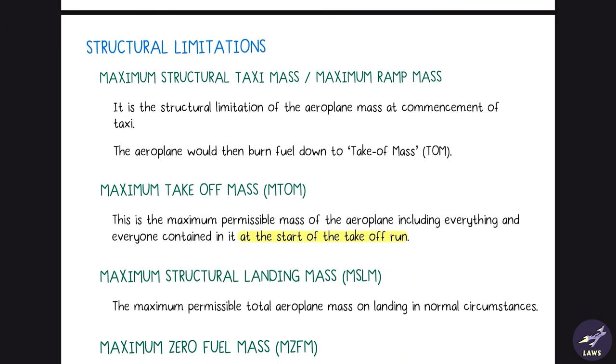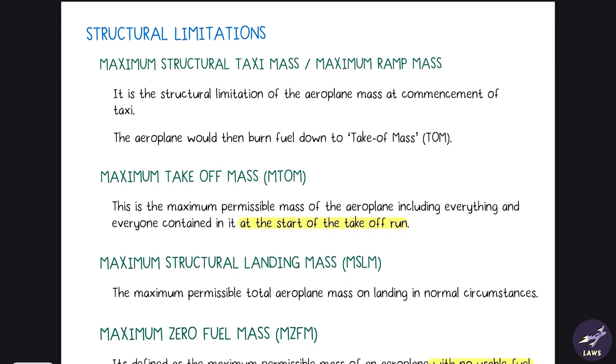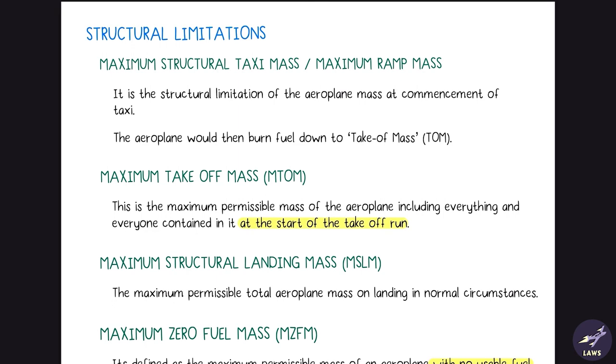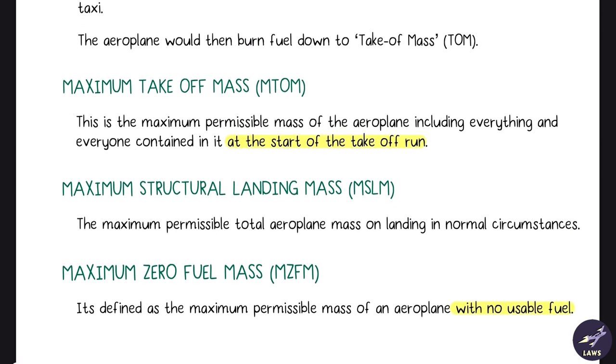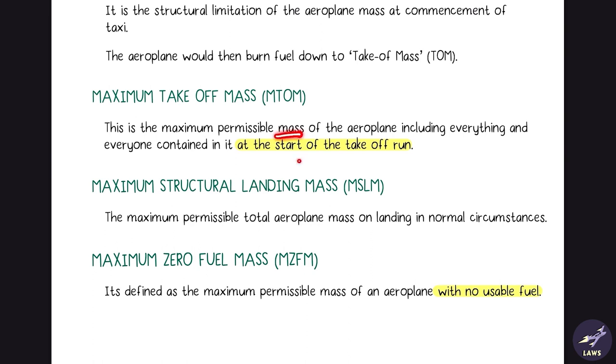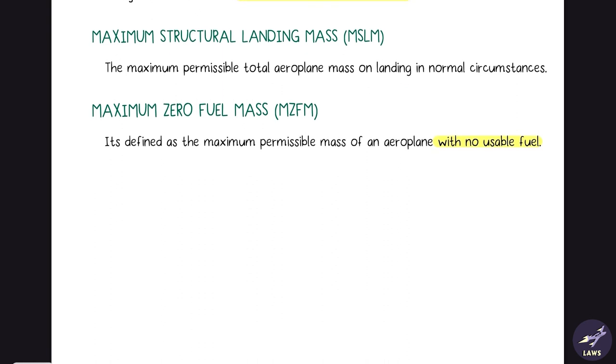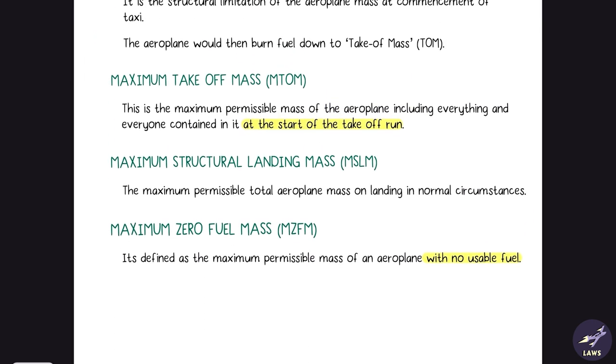Then we will look at structural limitations. Maximum structural taxi mass or maximum ramp mass is a structural limitation of the airplane mass at the commencement of taxiing. Then you have maximum takeoff mass, which is the maximum permissible mass at the start of the takeoff run. Then you have maximum structural landing mass, total airplane mass on landing in normal circumstances which is lesser than your takeoff mass. Then we have maximum zero fuel mass which is maximum permissible mass with no usable fuel.